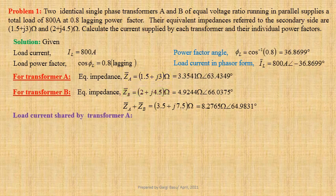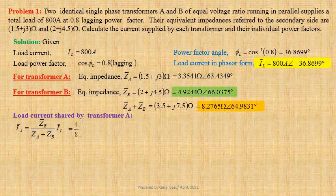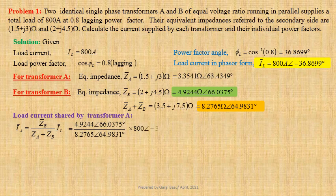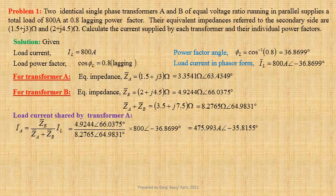Let us now determine load current shared by transformer A. IA equals ZB divided by ZA plus ZB, into IL. Using values we get 4.9244 ohm at an angle 66.0375 degree, divided by 8.2765 ohm at an angle 64.9831 degree, into 800 at an angle minus 36.8699 degree. That gives us 475.993 ampere at an angle minus 35.8155 degree.